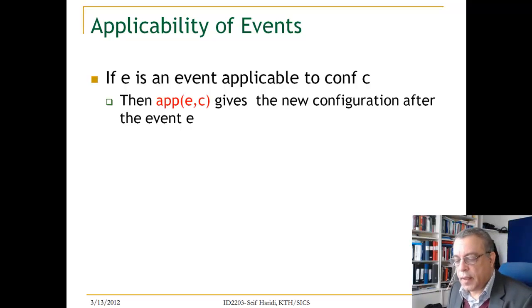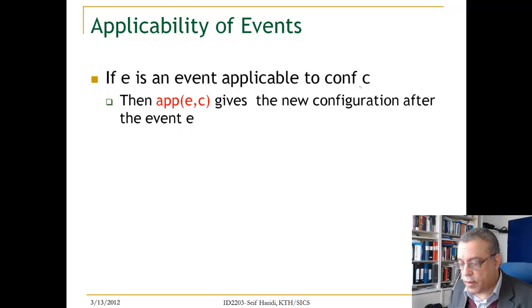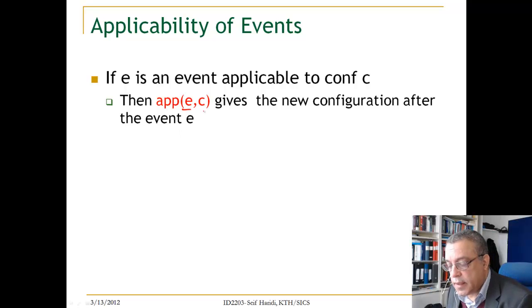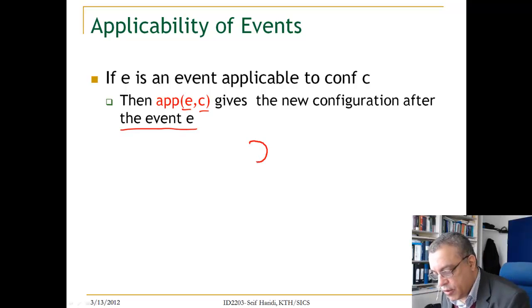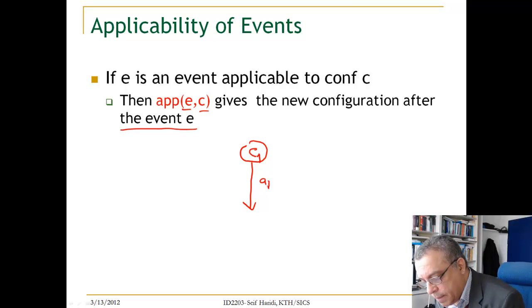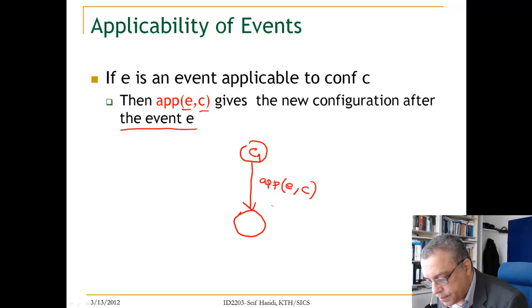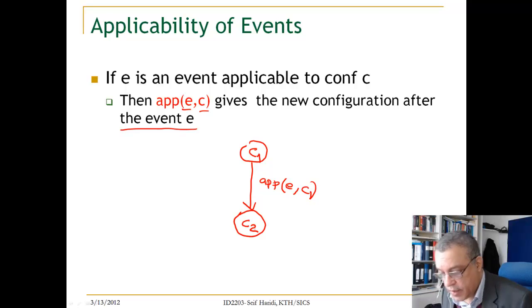If an event is applicable in a certain configuration, then applying event E in that configuration gives us a new configuration after performing the event. So if we are in configuration C, applying E on C gives us a new configuration C1 or C2.